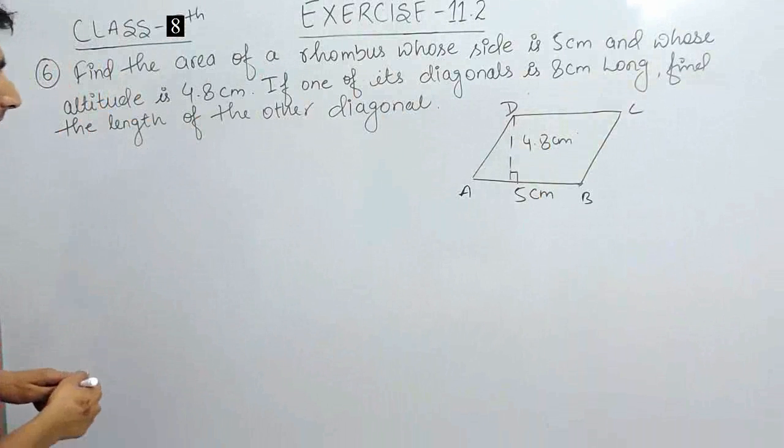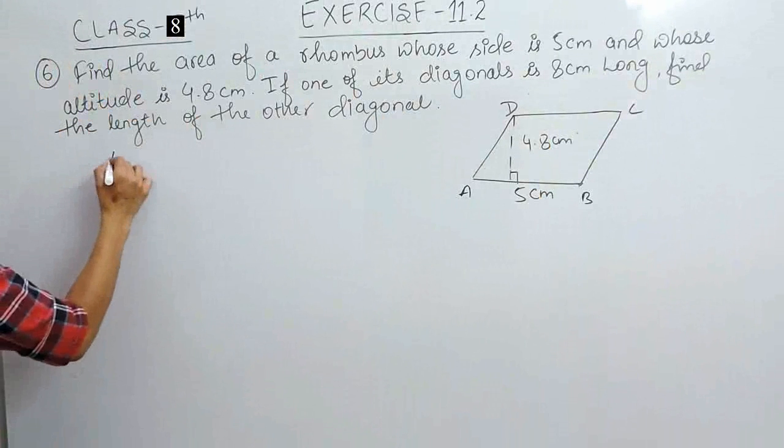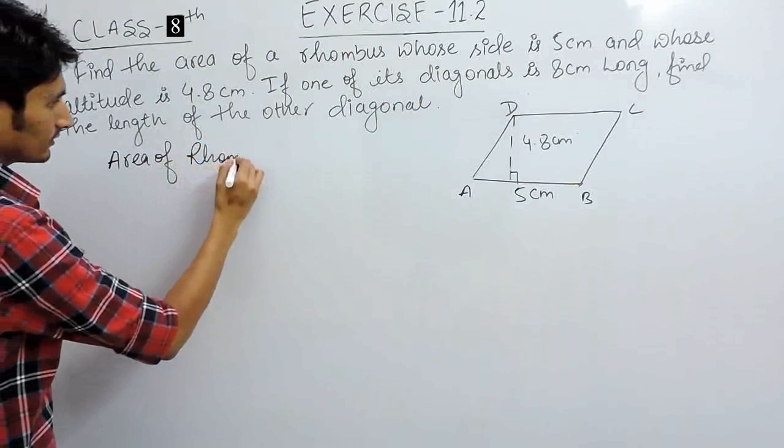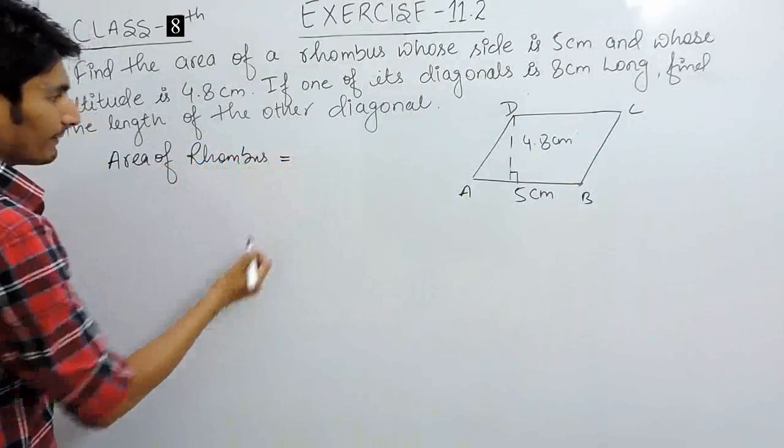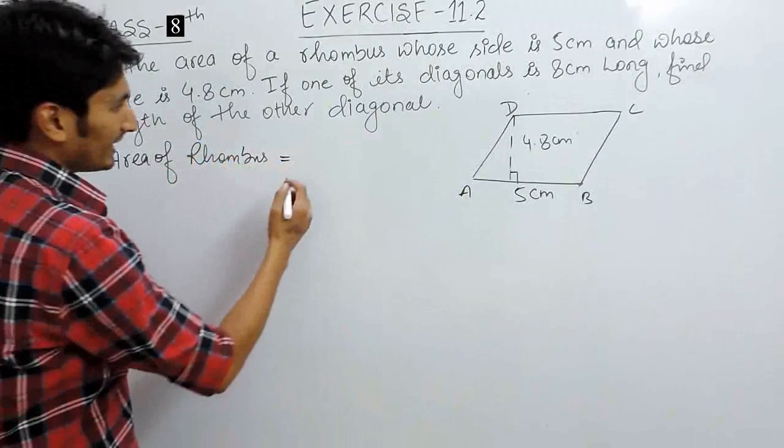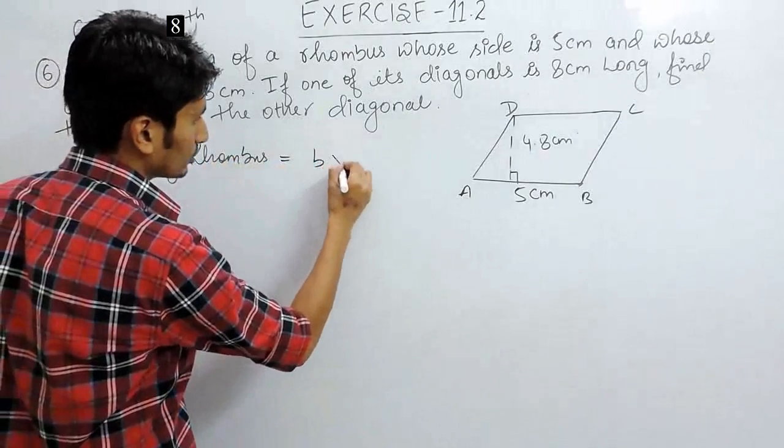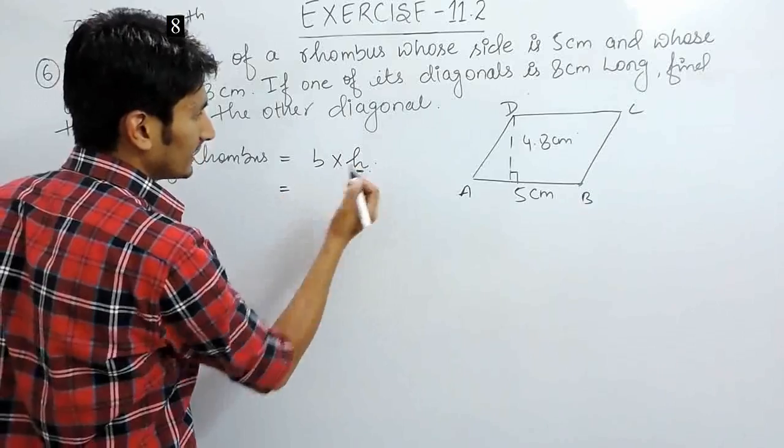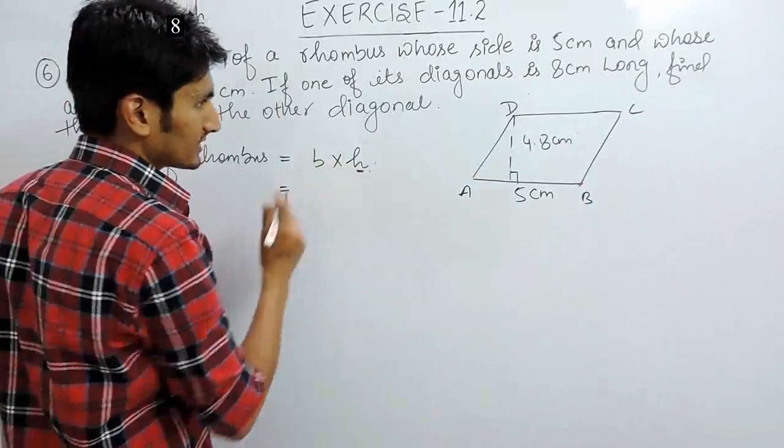Same formula we can apply here also. So, area of rhombus is same as the area of the parallelogram and the area of the parallelogram is base into its corresponding height or you can say the altitude or you can say the shortest distance.